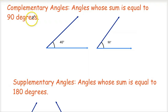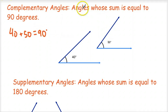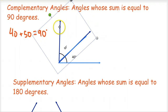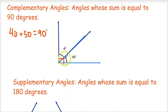Two other relationships we talk about a lot are complementary and supplementary angles. Complementary angles are angles whose sum is equal to 90 degrees — when you add up the measure of two angles, they equal 90 degrees. Here I have two complementary angles: one is 40 degrees, one is 50 degrees, and 40 plus 50 equals 90 degrees. Another way to think about this is that two complementary angles make a right angle — if you put them together as adjacent angles sharing a side and vertex, together they would make 90 degrees.